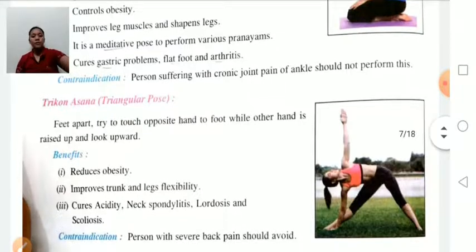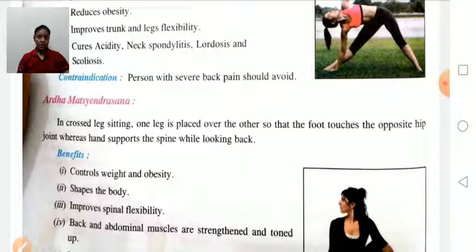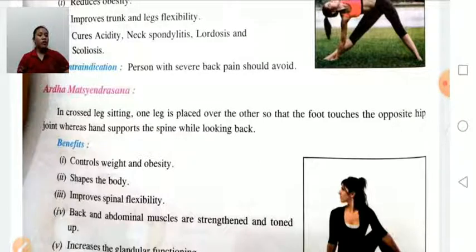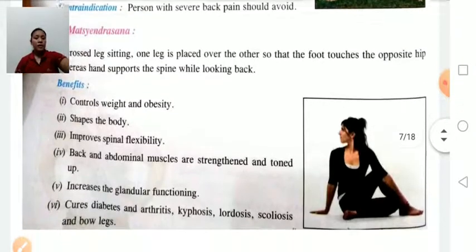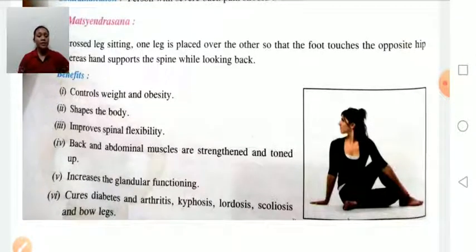Ardha Matsyendrasana: sit with a cross leg and one leg is placed over the other so that the foot touches the opposite hip joint, while the hands support the spine while looking backward. Benefits: controls weight and obesity, gives shape to the body, improves spinal flexibility, strengthens abdominal muscles, increases glandular functioning, and cures diabetes, arthritis, kyphosis (spine bending forward), lordosis, scoliosis, and bowleg.